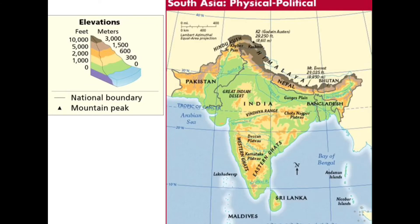Southern landforms include two mountain ranges that have been eroded down: the Western Ghats and the Eastern Ghats. Between these two you have the Deccan Plateau, which is part of the landmass that used to be part of the African continent. There is also Sri Lanka — a teardrop-shaped island that broke away from the original Indian landmass — and the Maldives, a chain of islands with about 35,000 square miles in total land area.